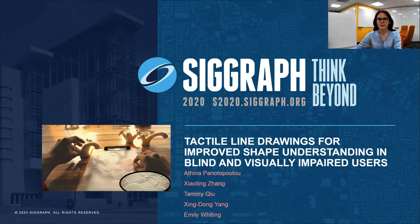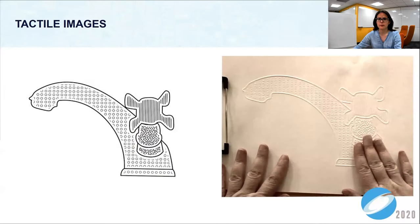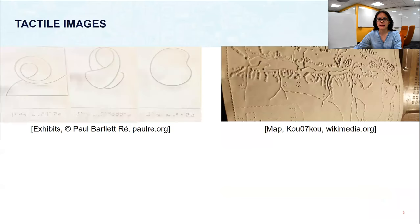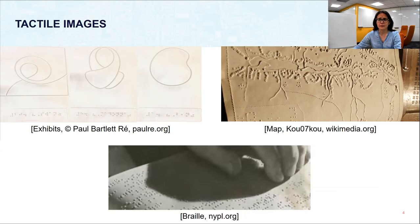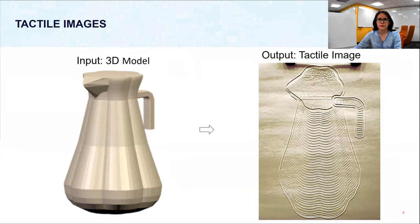I will present the paper: tactile line drawings for improved shape understanding in blind and visually impaired users. This work concerns tactile images that are felt on a piece of paper by hand and are used by people with blindness. They can be found in places like books, museums, and maps. Braille is a very well-known tactile alphabet which is also very successful. In contrast, shapes are not as successfully represented with tactile images, so our work improves the design of the images. In short, using a 3D object as input, we output a tactile image and test shape understanding from it.